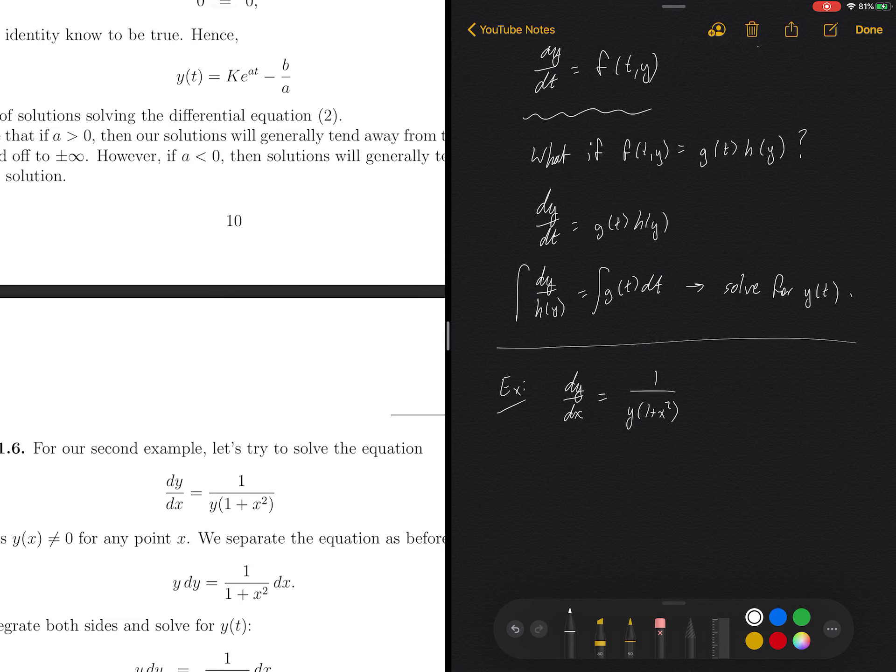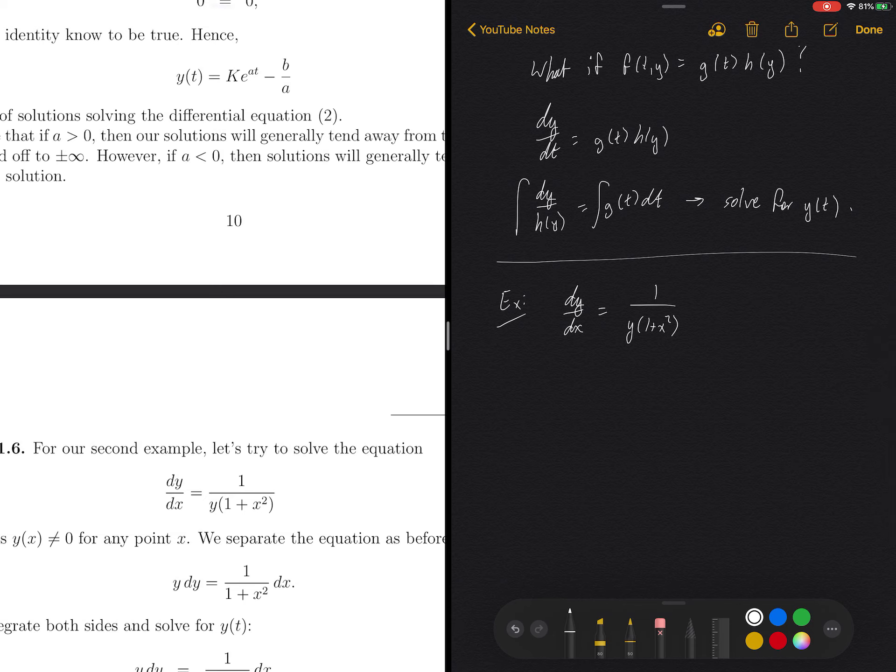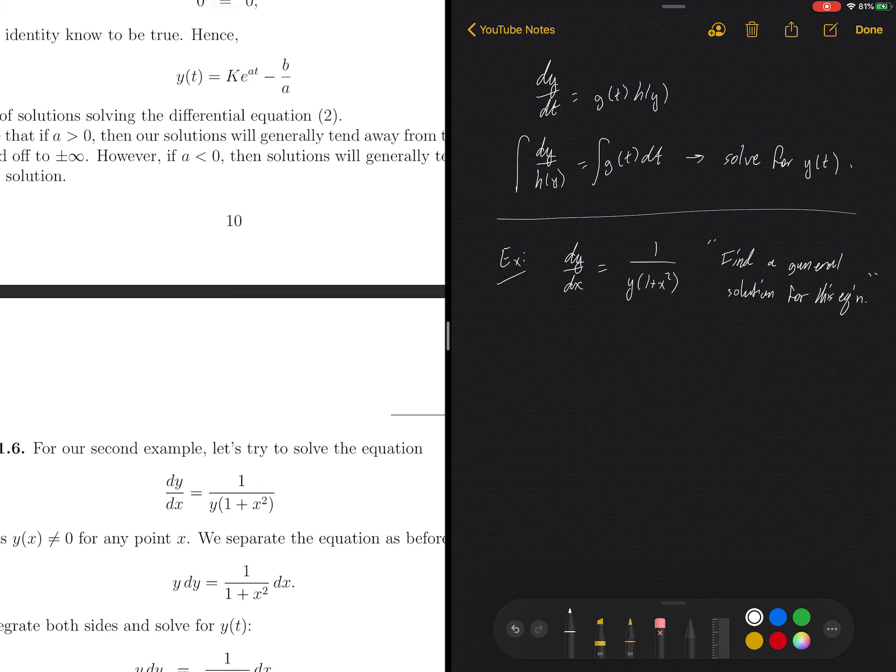So what we're doing in this case, dy dx, I'm going to go ahead and write this as 1 over y times 1 plus x squared. Excellent. So this is what we are given and we would like to find a general solution for this equation. And that's usually how it would be given, like how we would ask for it on an exam or if you encounter this in the wild. You would like to know which functions satisfy this equation.